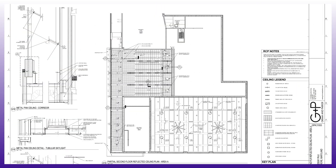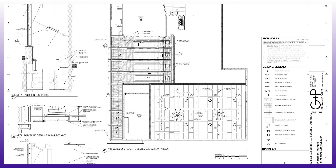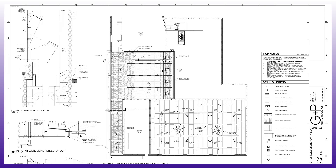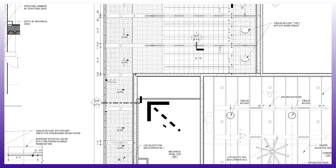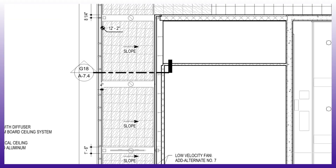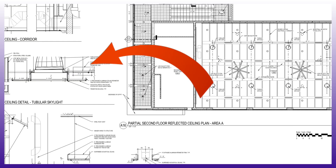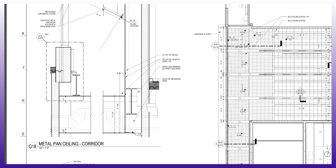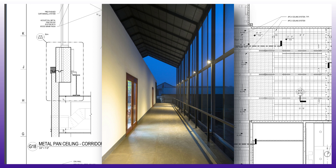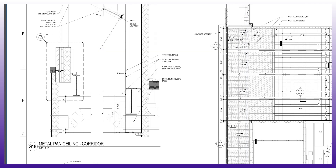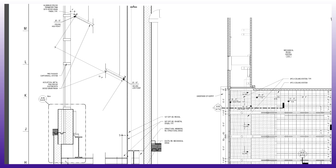Now we're on the second floor of that same area. I brought you here to look at a couple of other details. Notice this area right here — it says that there is a slope. It shows this 2x2 — I think this is the metal panel ceilings — but why does it say a slope? Looking at this detail here, which is on this sheet, this is an open corridor. We're seeing some mechanical duct running across the corridor right there.